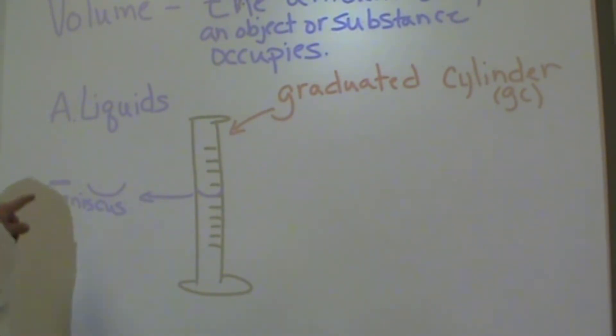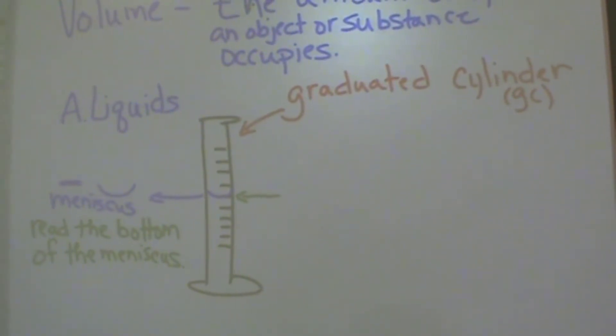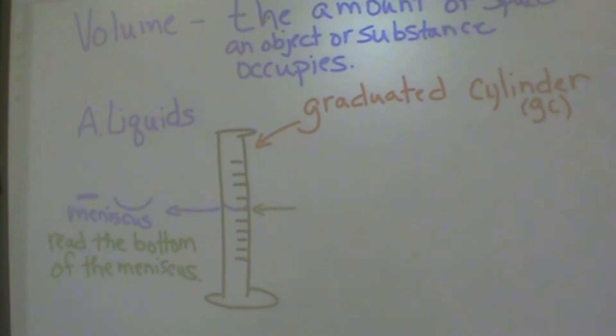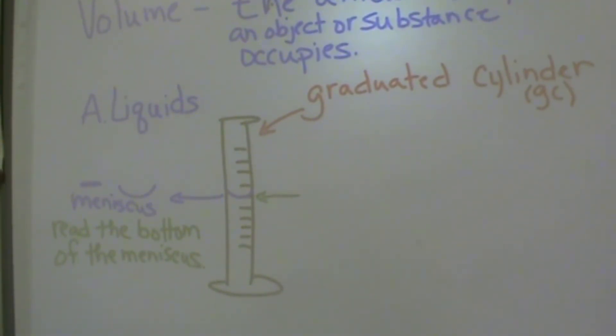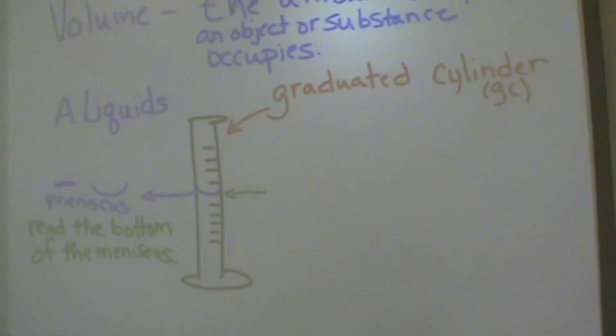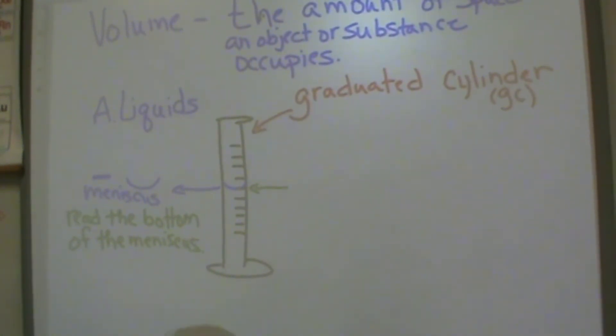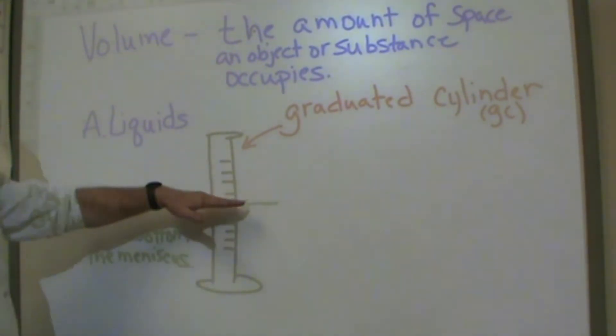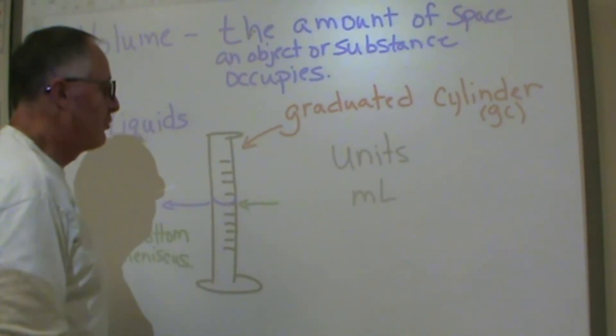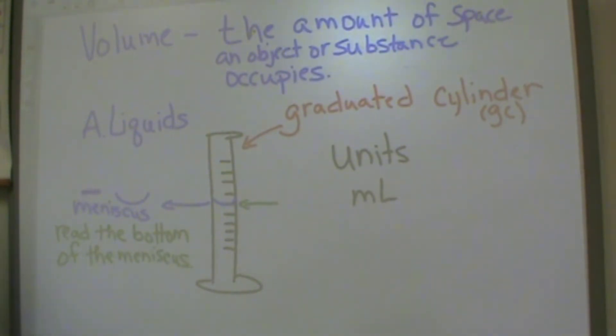Yeah, you can still see that at the top. And when you read that, you're going to read the bottom of the meniscus. That's the way - I mean we could have it so that you read the top or the middle of that, but it is made measured to find the bottom of the meniscus is where it actually is read.